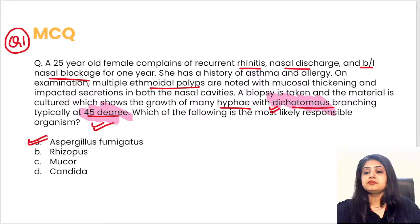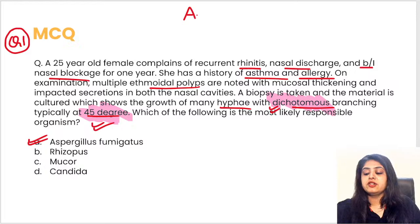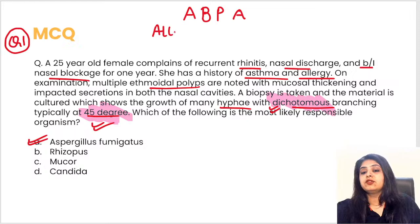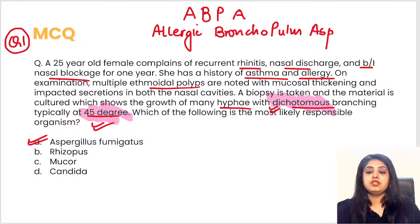This patient also has allergy and asthma — can Aspergillus result in allergies? Yes. That condition is known as Allergic Bronchopulmonary Aspergillosis (ABPA). Aspergillus can also involve the nose causing rhinitis, nasal polyps, and discharges — all clinically fitting this case.